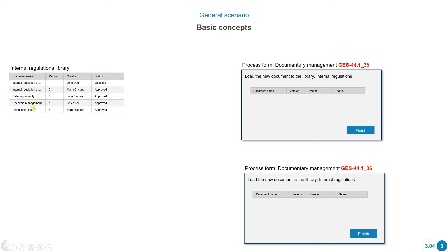Here we can see we have the name of the document, the version, the creator, the status, and over here we have a process called Documentary Management. This is the reference of the process, and in a certain form we can see that they've placed a library field.